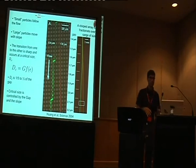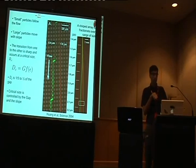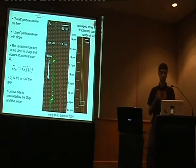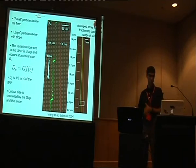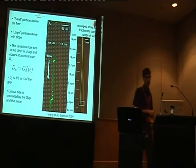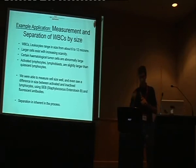The critical size d_c is proportional to the gap times some function of epsilon, which is the slope. You can use this for a sort of size spectroscopy — put in a mixture of different sizes and, if you engineer the posts correctly, you can spread them out into different size groups. You measure white blood cells by size on a microscope, but with this approach you separate them as you measure them. White blood cells — leukocytes — are roughly 6 to 12 microns.